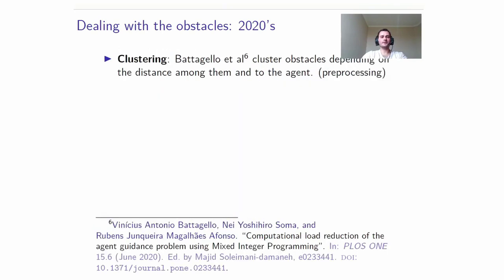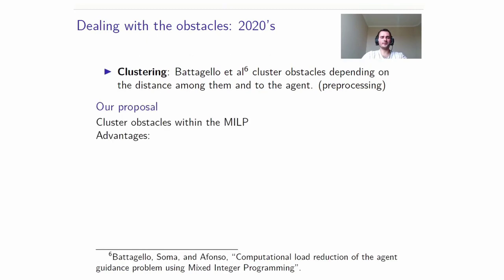Later on, Batagelo and others proposed to cluster the obstacles in a preprocessing approach that considered the distance between the vehicle and the obstacles and also the distance between the obstacles themselves to choose to which cluster they belonged. This also involved preprocessing.